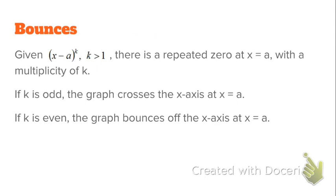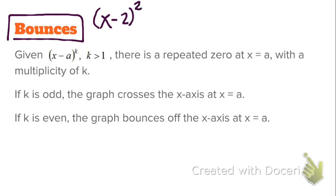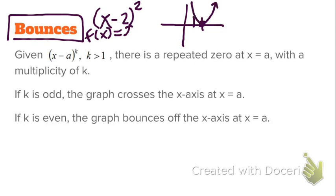Now let's talk about bounces. There could be a repeated zero. The best example is a function like f of x equals x minus 2 squared. That is going to have a zero at positive 2, and it would be a parabola with the vertex at 2 comma 0 — it kind of just bounces right off the x-axis. That's going to occur whenever you have a zero raised to an even degree.